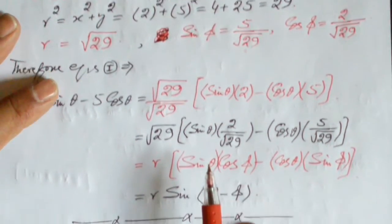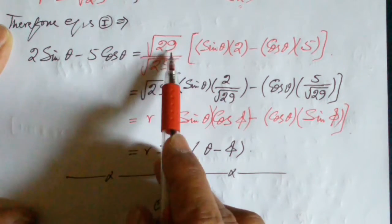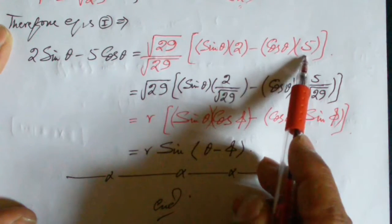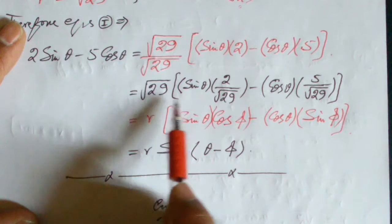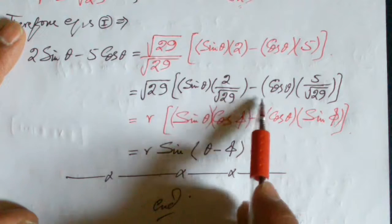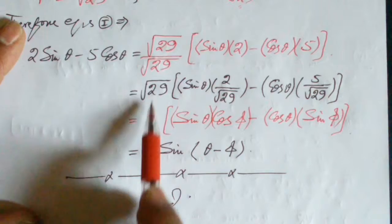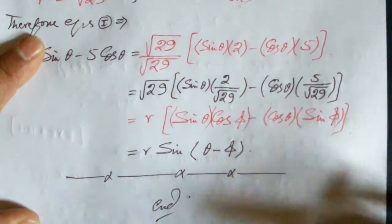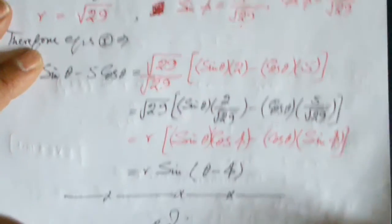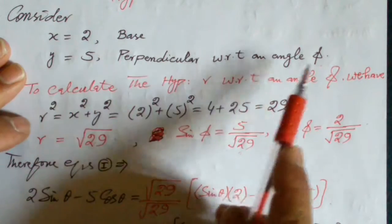We have the original expression multiplied and divided by √29: √29 times [sin(θ)·(2/√29) minus cos(θ)·(5/√29)]. Rearranging: √29 times [sin(θ)·(2/√29) minus cos(θ)·(5/√29)]. This quantity corresponds to r, where 2/√29 relates to cos(φ) and 5/√29 relates to sin(φ).